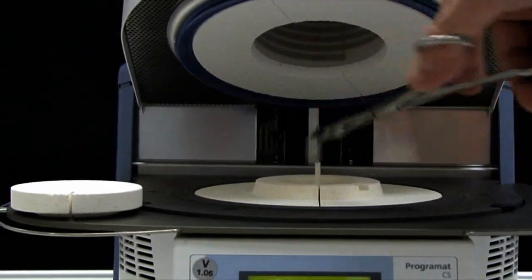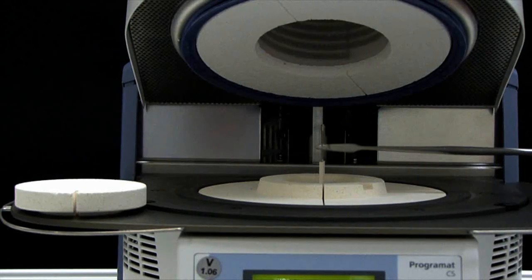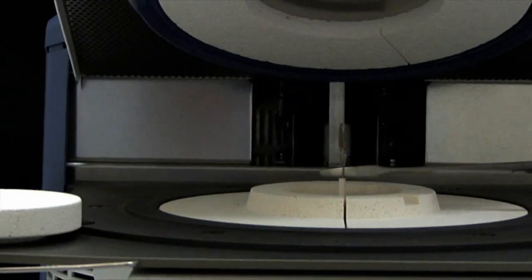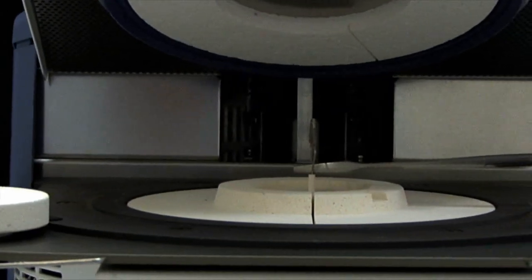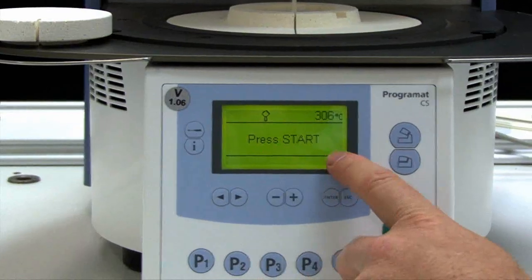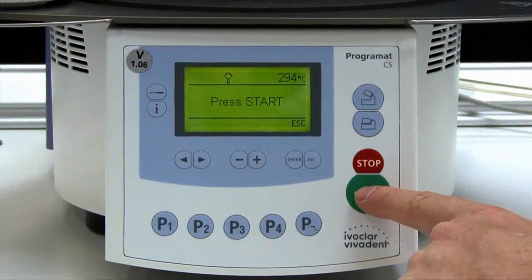If necessary, use the furnace tongs to apply slight pressure to the center of the ATK2 base until the sample clicks into place. Next, start the calibration program.